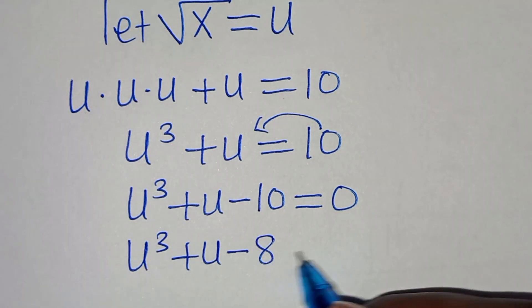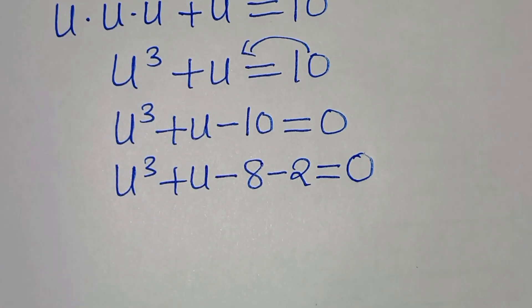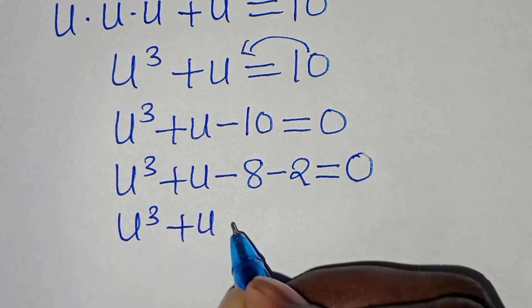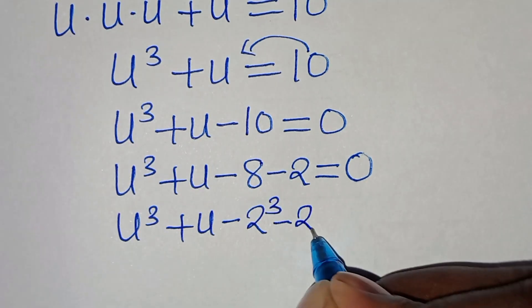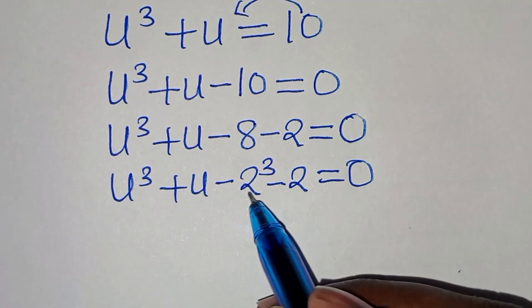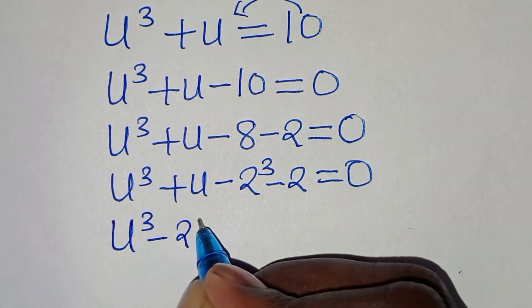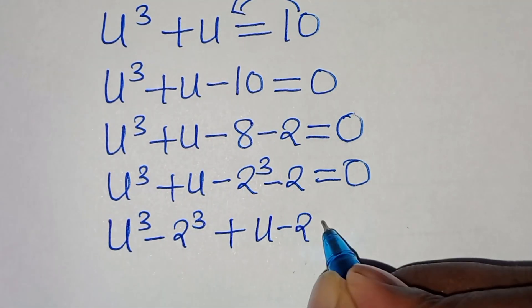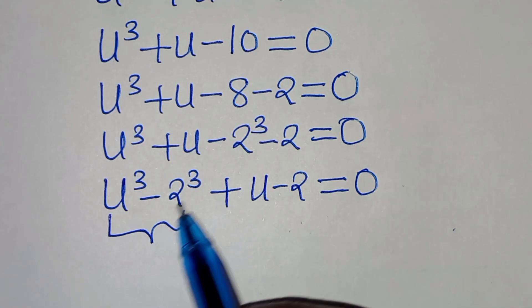Now, minus 10 can be expressed as minus 8 minus 2. So we rewrite the equation as u³ minus 2³ plus u minus 2, equals 0, since 8 is 2 to the power of 3.